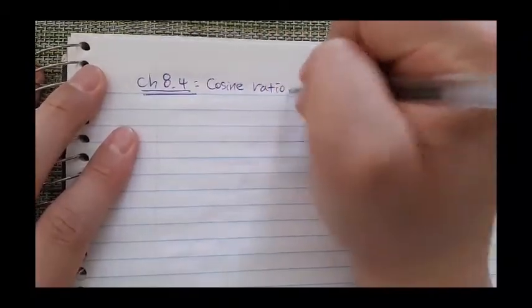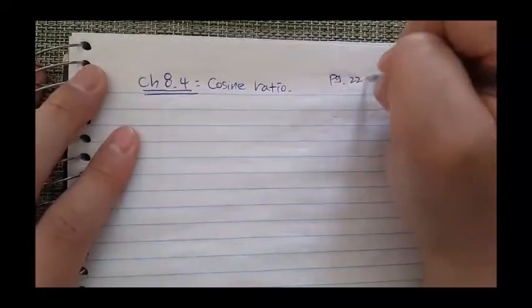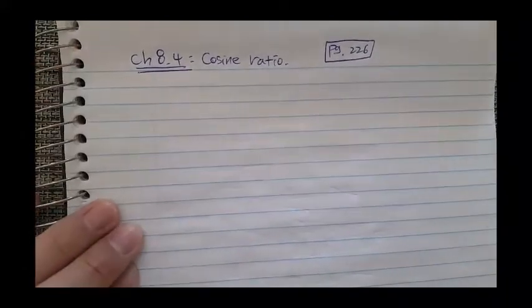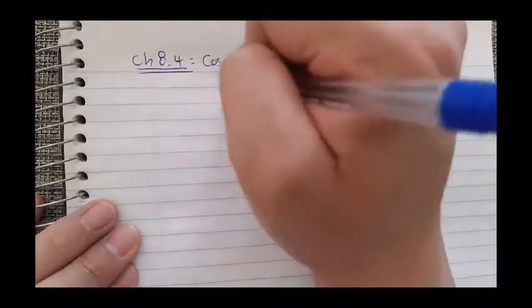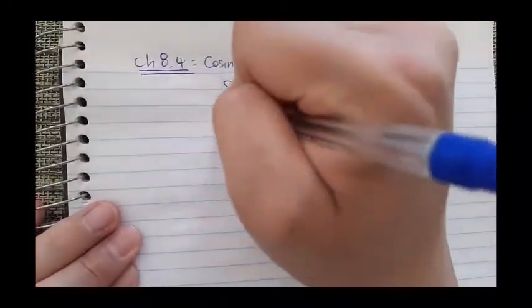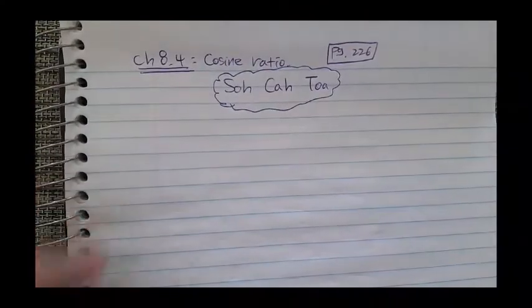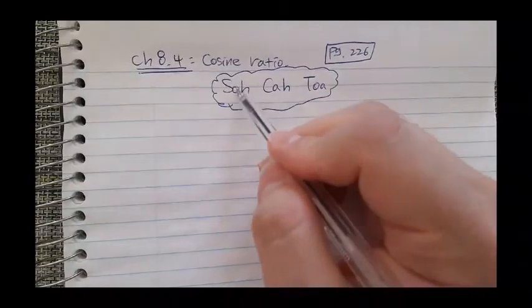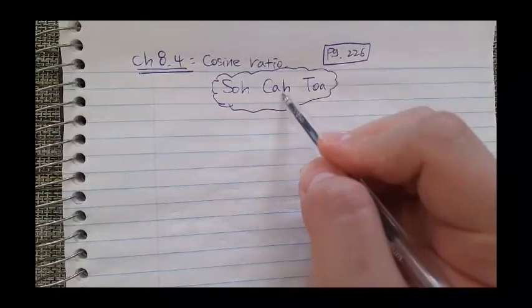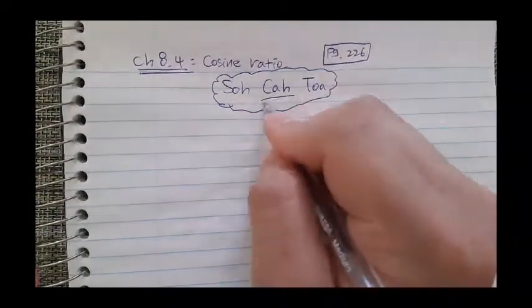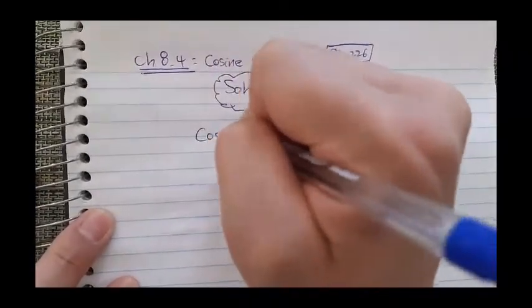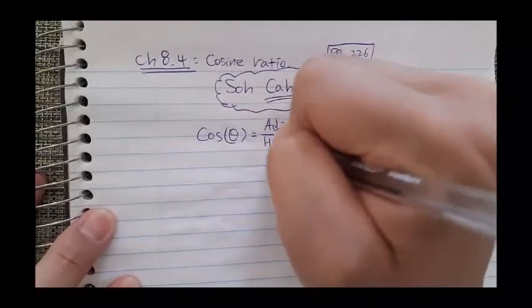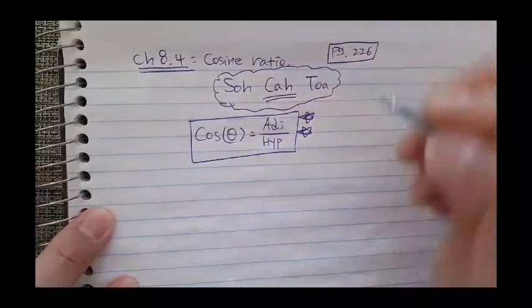Without further ado, let's go to chapter 8.4 — cosine is our next topic, available on page 226 of your booklet. As mentioned in SOH-CAH-TOA: SOH is sine equals opposite over hypotenuse; CAH is cosine equals adjacent over hypotenuse; TOA is tangent equals opposite over adjacent. We're going to focus on CAH — cosine of an angle is equivalent to adjacent over hypotenuse. That's the next trigonometric formula.